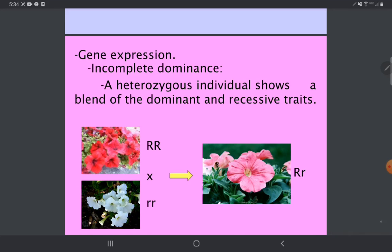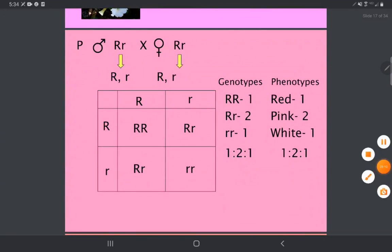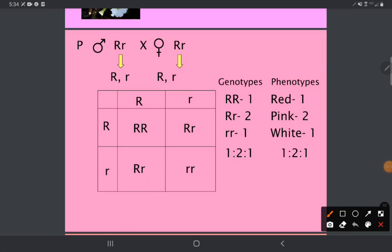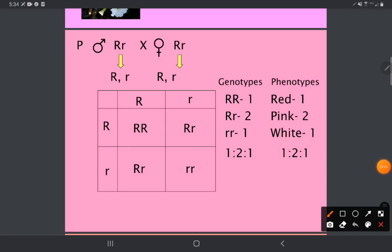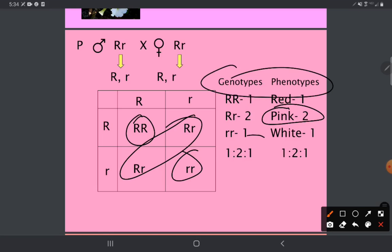This is an exception to Mendel's rules, and here are its consequences. Before, we would have said that all three of these are red and only this one was white, giving us a three to one ratio in phenotypes. But now the heterozygotes get their own phenotype, which is pink. So the genotype and phenotype ratios will now be the same because the heterozygotes get their own phenotype.